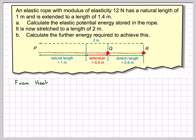So first of all, let's have a look. From Hooke's law, the tension is given as lambda x divided by L, where lambda is the modulus of elasticity, x is the extension, and L is the natural length. And work done is force times the displacement.